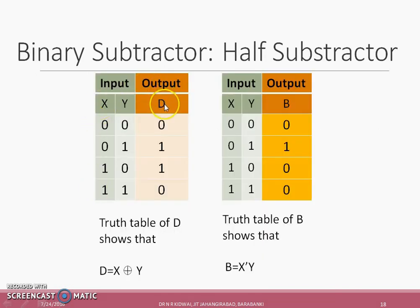By observing the truth table of difference D, it can be observed that it is truth table of XOR gate. So D is basically X XOR Y, the same result as obtained for summing half addition. While by observing the truth table for borrow bit B, it can be observed that B is equal to X bar Y, X complement Y.